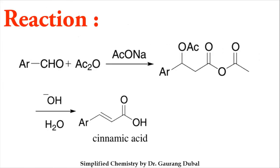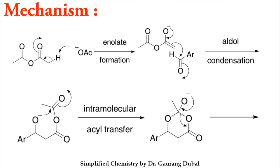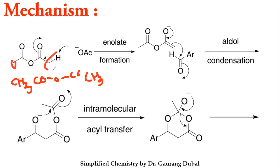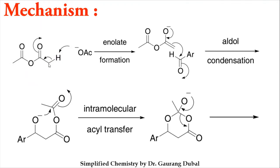Now we will see the mechanism part. How will the mechanism start? You just have to take acetic anhydride — as we know, acetic anhydride is CH₃–CO–O–CO–CH₃. For our convenience we wrote only one hydrogen on the alpha carbon, but actually this carbon possesses three hydrogens. We wrote only one because our focus area is only one; the rest two we are not going to touch.